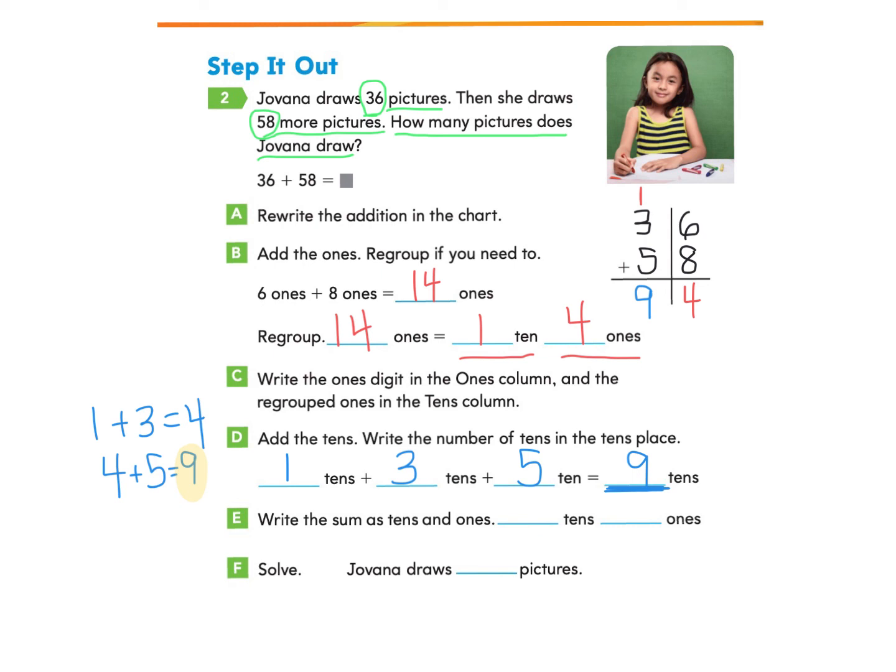Now it asks us to write the sum as tens and ones. How many tens and how many ones are found in our answer? We see that there are nine tens and four ones. So we have solved this problem. Jovanna draws 94 pictures.